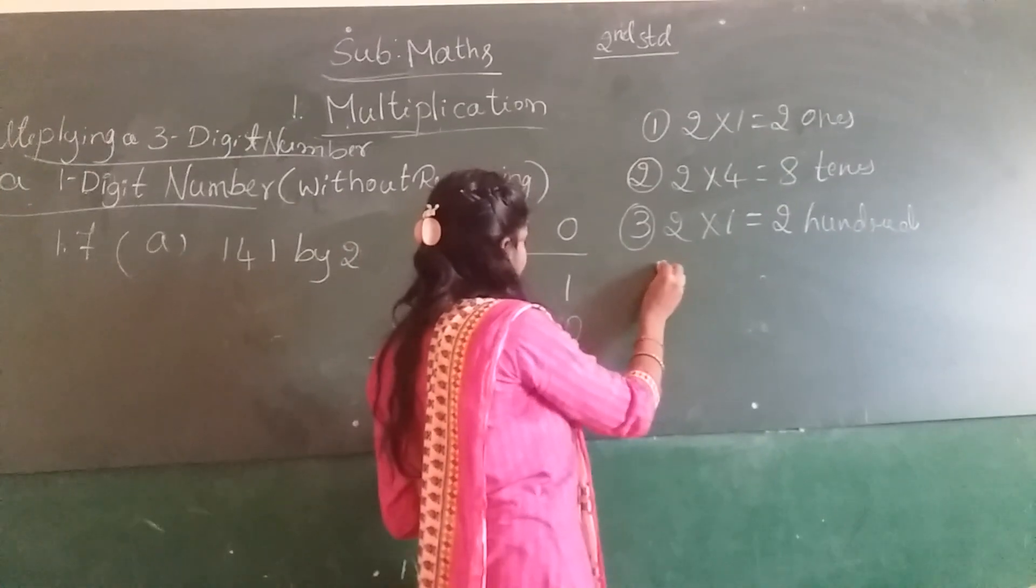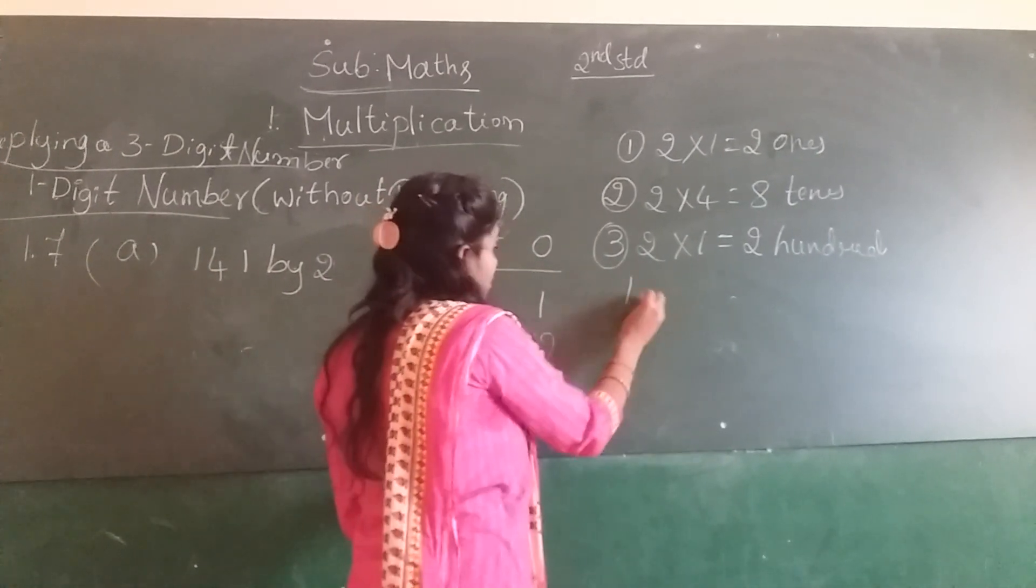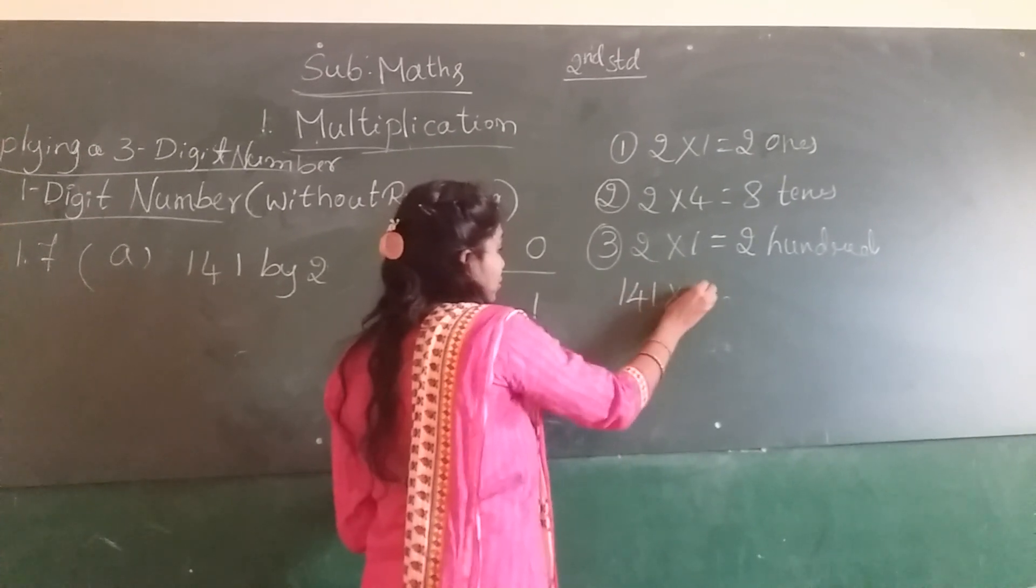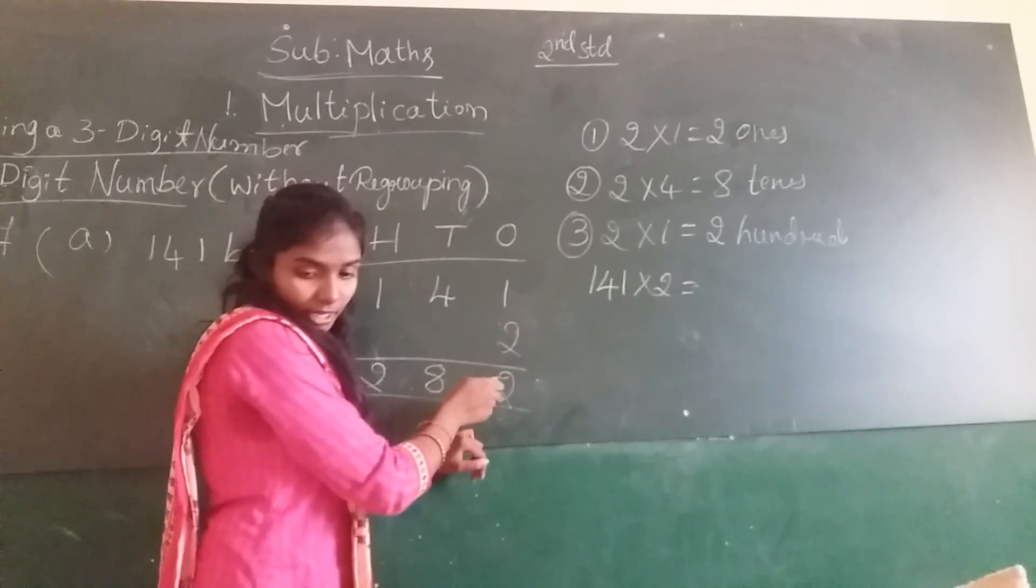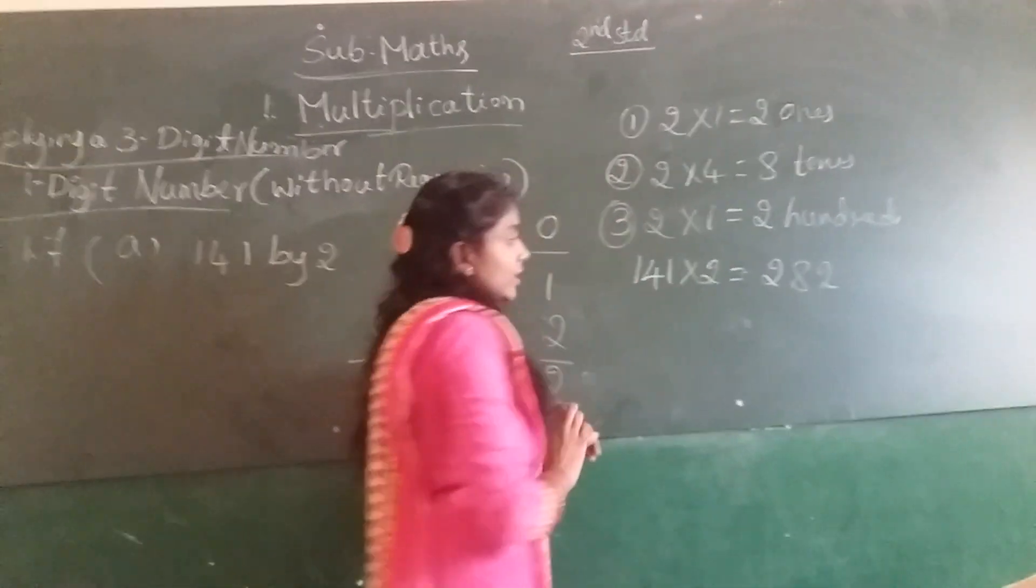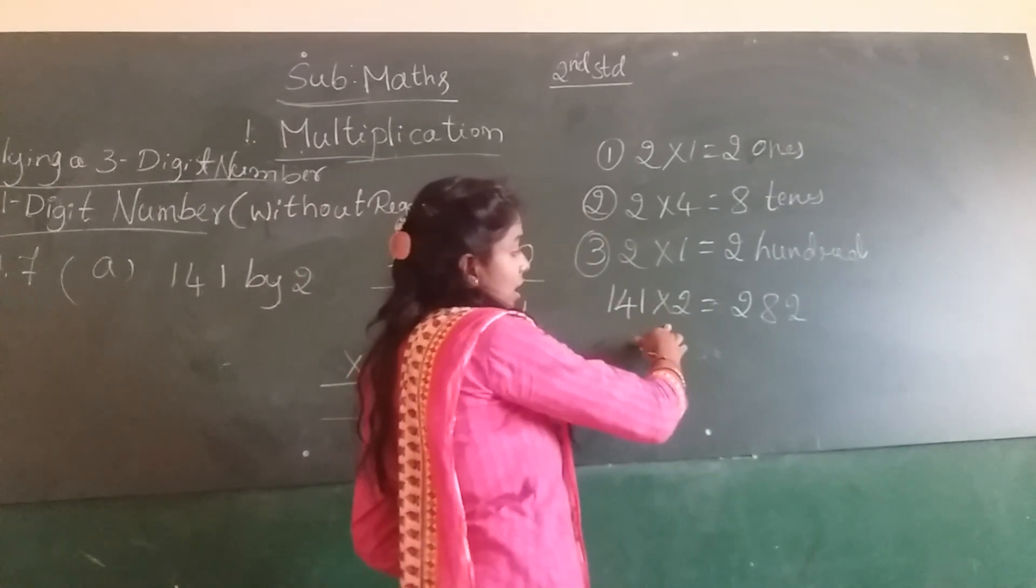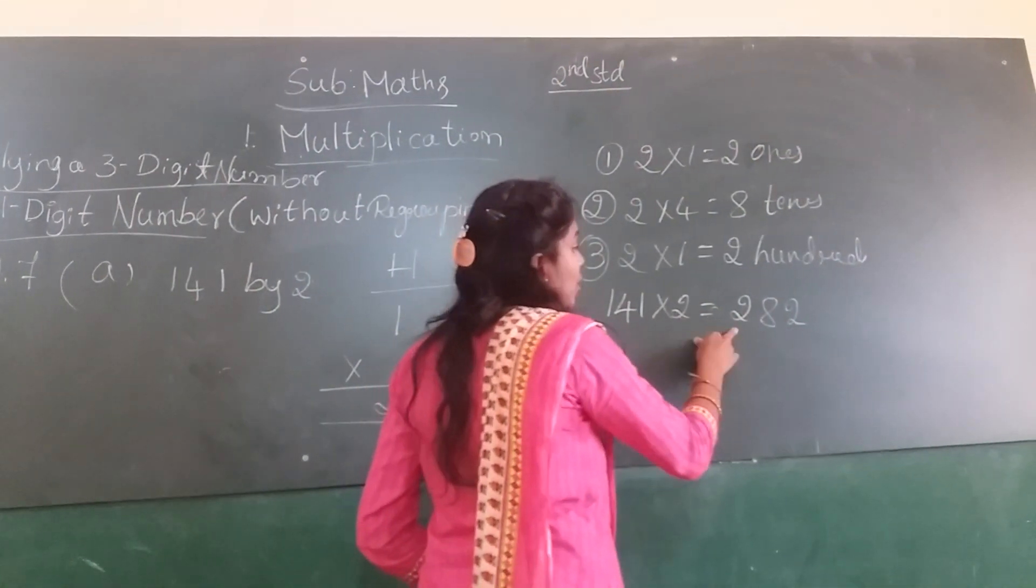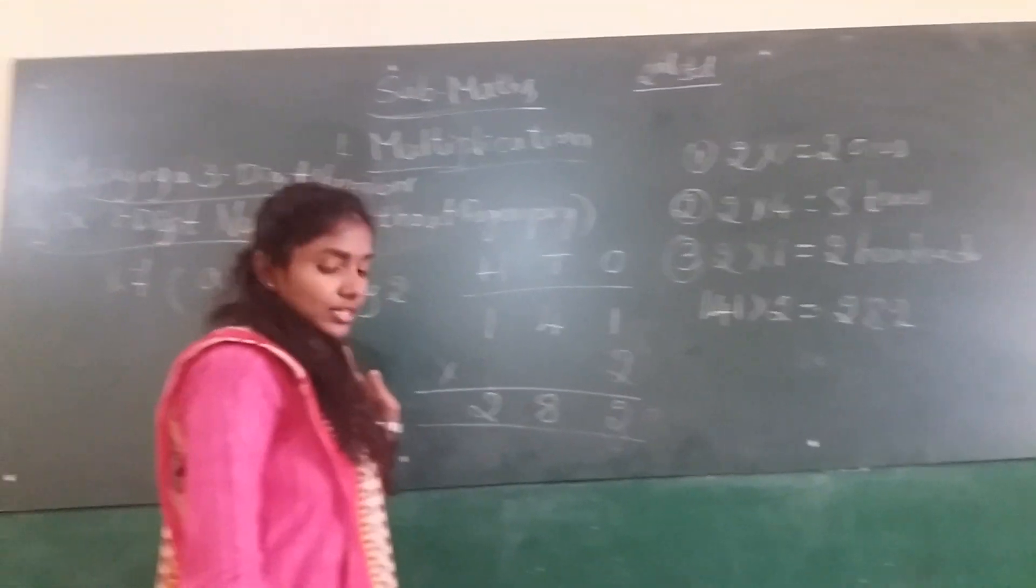So what is the answer? 141 into 2 equals to 282. This is the answer for the question.